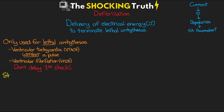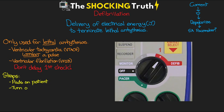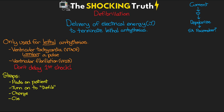The steps to defibrillate quickly are: put the pads on the patient, turn the defibrillator on into defib mode, press the charge button, ensure everybody is clear and not touching the patient, and then deliver the shock. The shock is delivered immediately, regardless of where the patient is in the electrical cycle. Once the shock has been delivered, current practice is to immediately begin chest compressions.